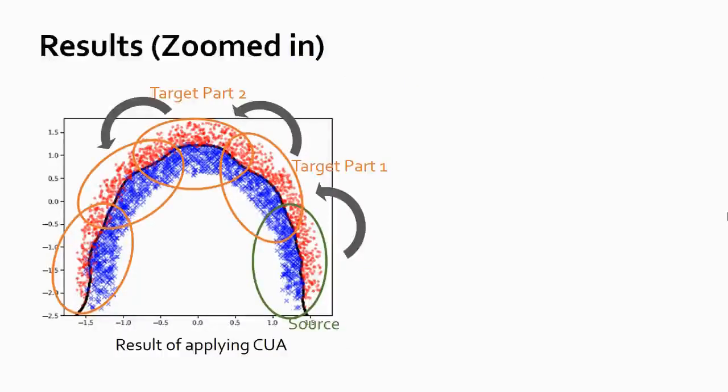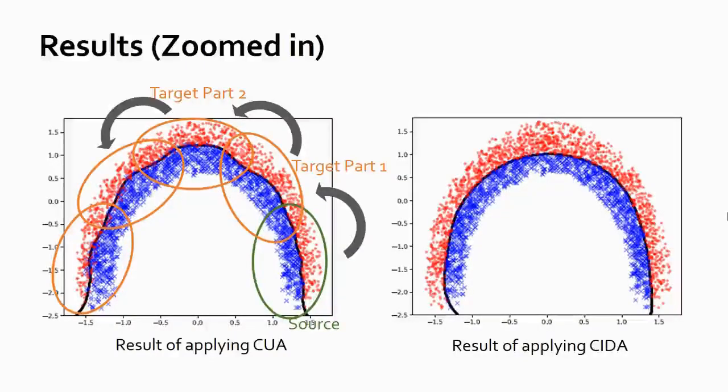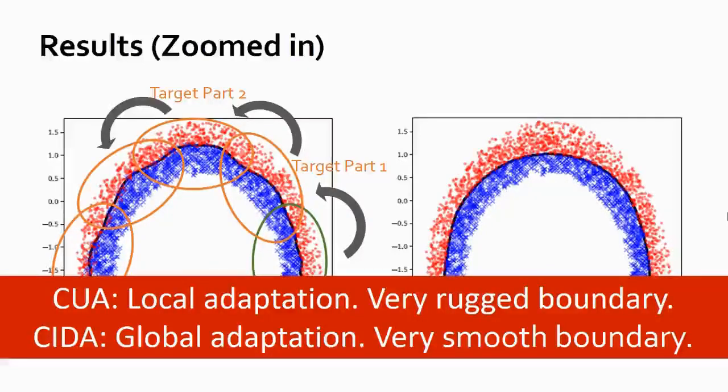Here, we take a closer look at CUA. We can see that it successfully captures the change of the decision boundary, but the boundary is very rugged, since the adaptation is done locally without seeing the global picture. In contrast, CIDA captures the correct change and provides a smooth decision boundary.